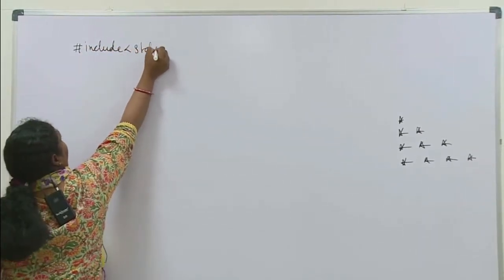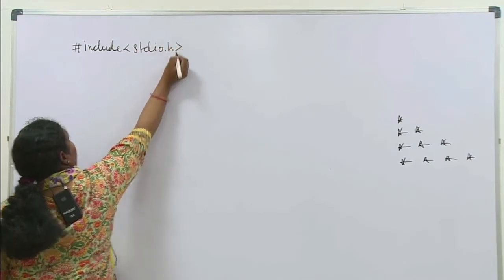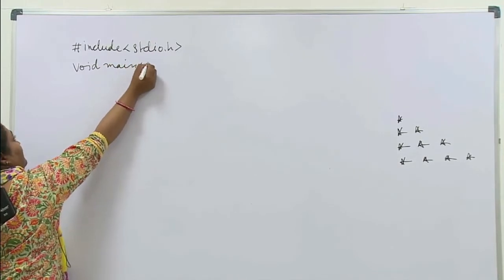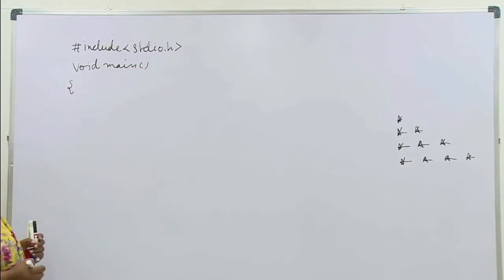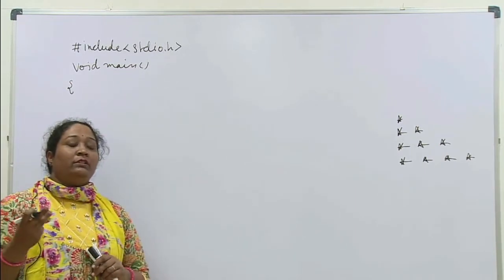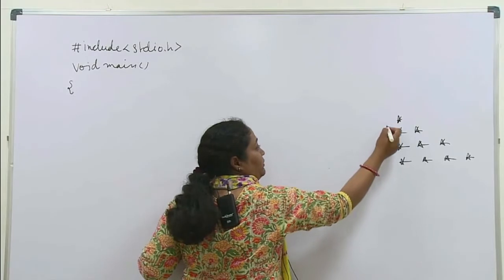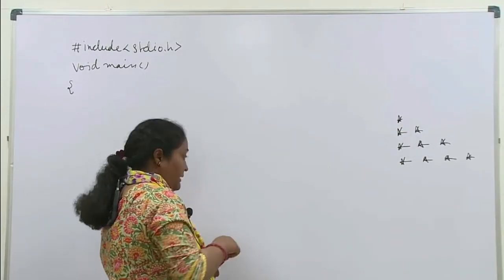Now we have to write a program. I will write a program here. So this pattern will print it. Hash include stdio.h void main. This is our header file, then main. This is my main, the pattern starts. Now what do I do? Now I have two variables and two loops. One loop who can control the horizontal line.